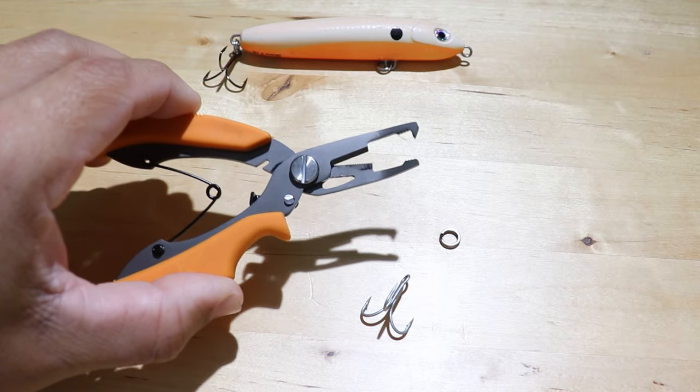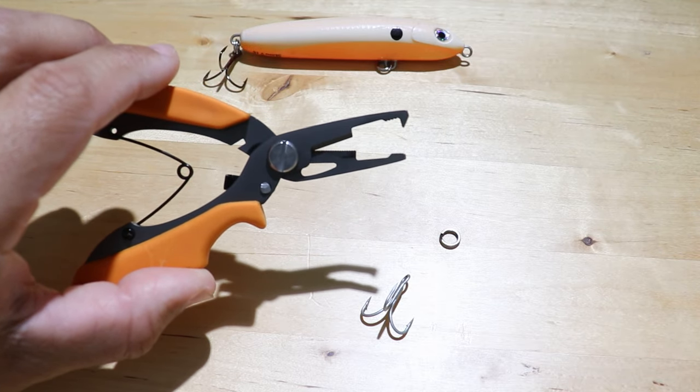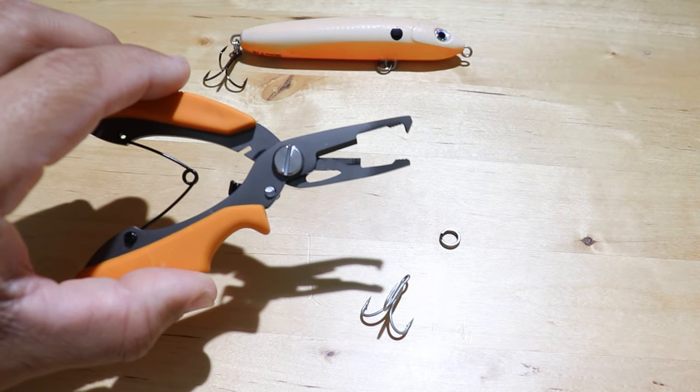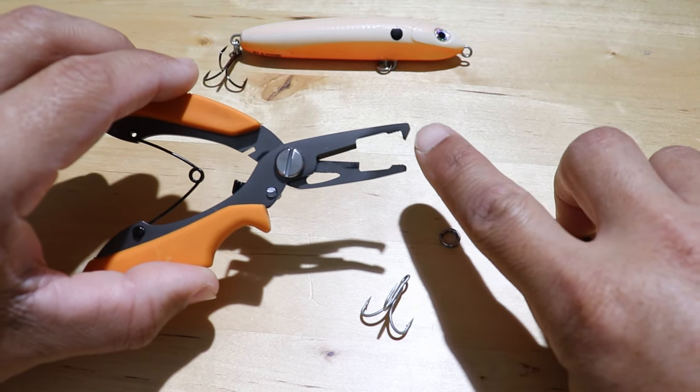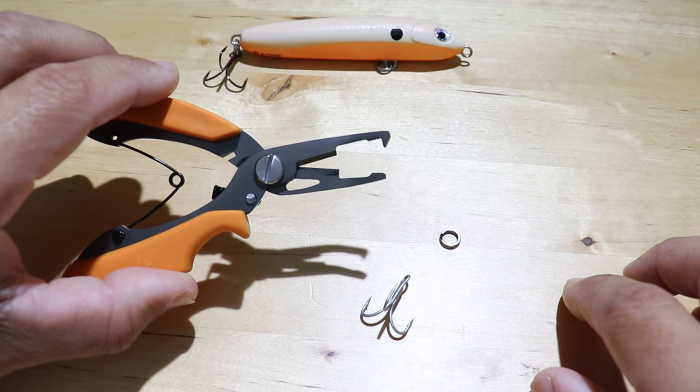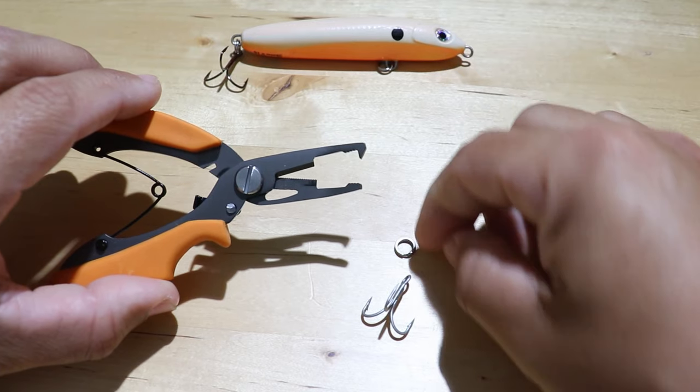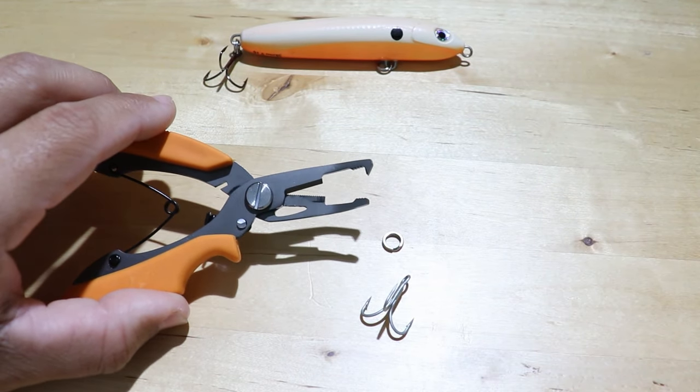These pliers can definitely be a lifesaver when you're switching out those treble hooks or split rings. Now you will notice these pliers have a little notch on one side and that is what enables you to open up the split rings and I'm going to show you here in a second.